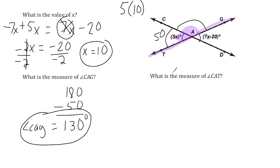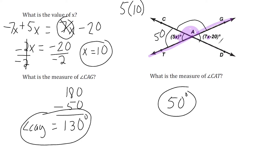Now we have to find the measure of angle CAT. I actually just found that — all we did was plug 10 in for x, and 5x is 50 degrees. Now, if we were asked to find the measure of angle GAD, which is the acute angle on the other side, it would also be 50 degrees because it is vertical to this one.